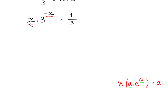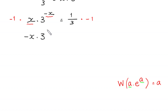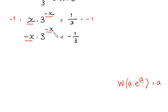To make this x negative, we multiply both sides of this equation by negative 1. So negative x times 3 to the power negative x is equal to negative 1 over 3. Now we have the same expression, negative x, in both places.